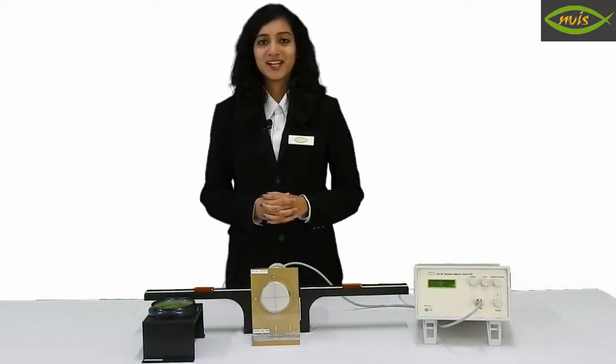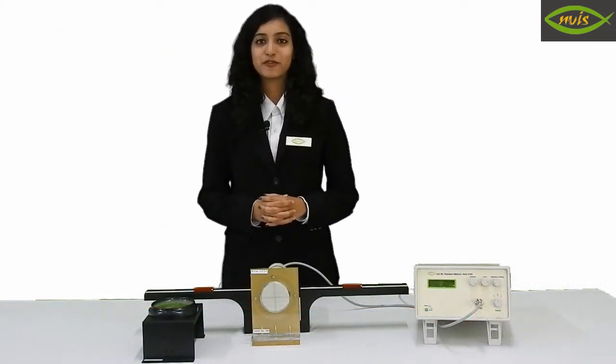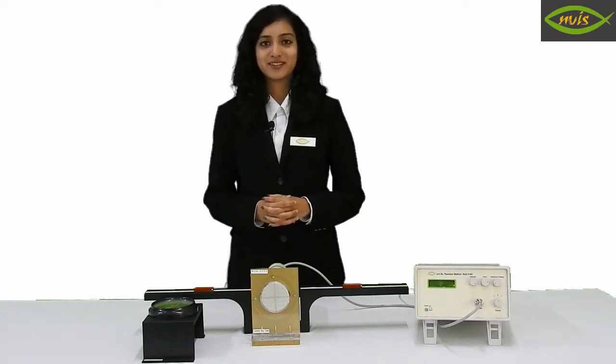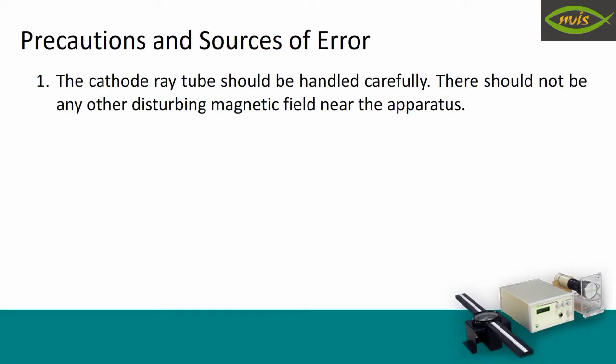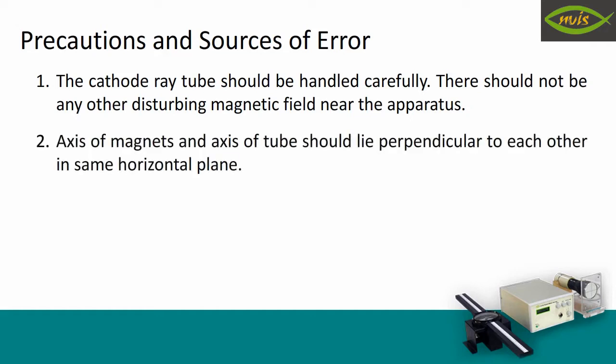Following are the precautions and sources of error of the E by M experiment. The cathode ray tube should be handled carefully. There should not be any other disturbing magnetic fields near the apparatus. Axes of magnets and axis of tube should lie perpendicular to each other in same horizontal plane.